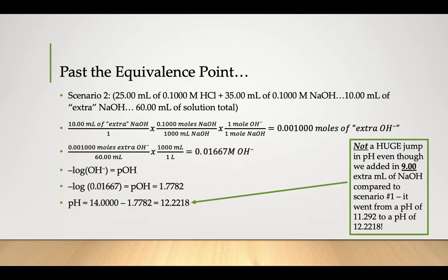This time, it's not a huge jump in pH from scenario one, where we overshot by one milliliter, to this scenario overshooting by a total of 10. Between scenario one and scenario two, there's an extra nine milliliters, but our pH only went up about one.